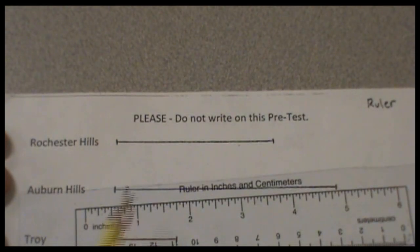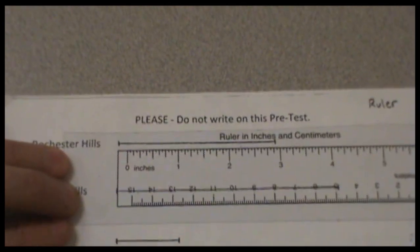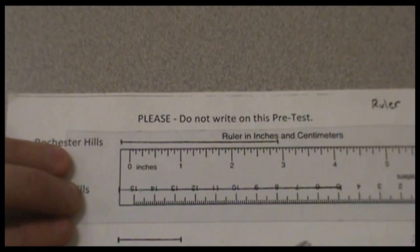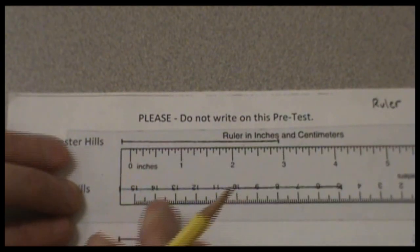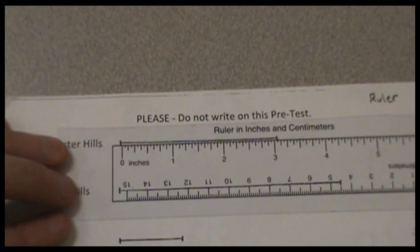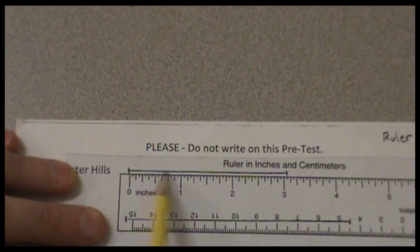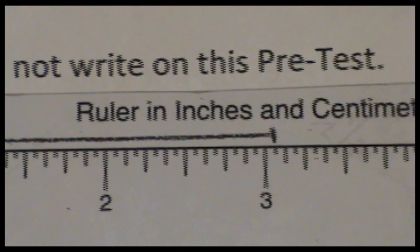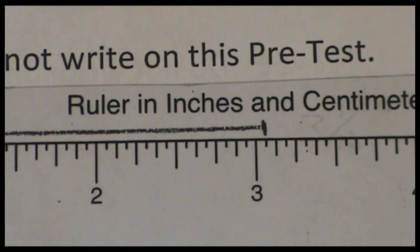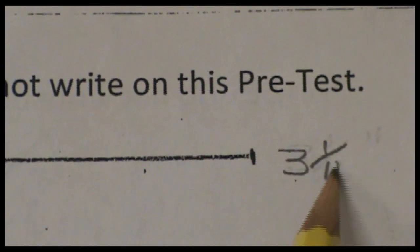I'm now ready to use this ruler to measure the Rochester Hills line. Almost every ruler I've ever used has a blank spot at the beginning so that you can use the ruler year after year. Even though some of the parts might wear down or chip away, you can still start anything that you're measuring at the zero mark. I'm going to start this right at the zero mark. I see that this line has 3 whole inches. And when I zoom in towards the end here, I can see that at the end, I have one tick mark past the 3 inch mark. That means that this line is actually 3 and 1 sixteenths of an inch long.